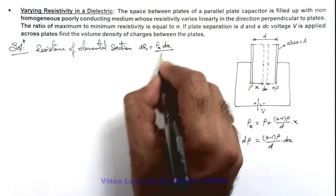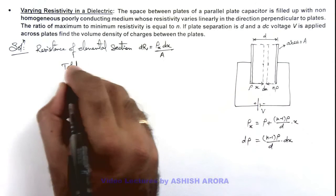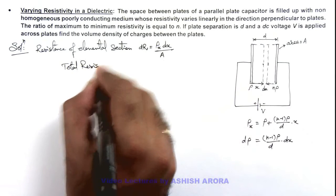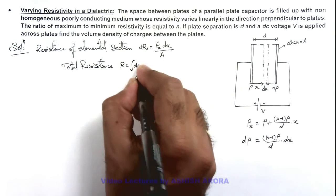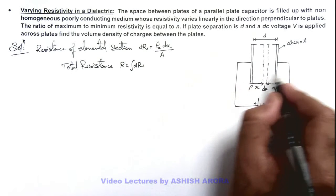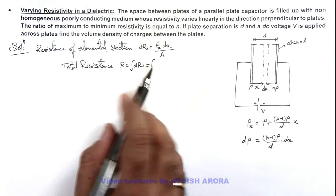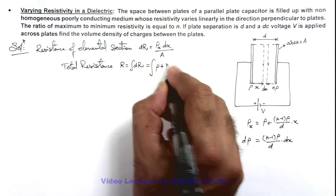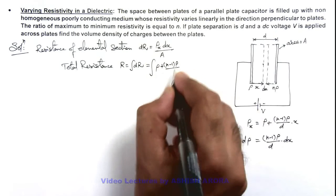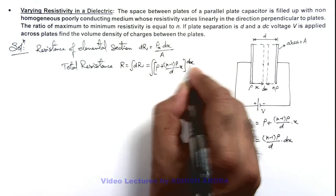So here we can calculate the total resistance which can be given as integration of dR as all such dR's are taken in series combination. So this will be integration of, we substitute the value of ρ(x) over here, is ρ₀ plus (n-1)ρ₀/d multiplied by x, into dx/A.